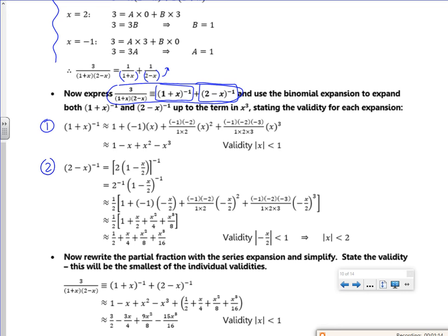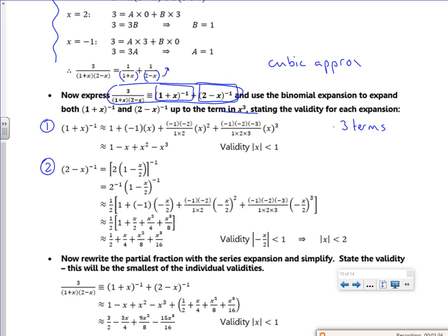And this one says go up to the x cubed term, which is the first four terms. So it might also say a cubic approximation. Most exam questions only go up to the first three terms, which is x squared approximation.